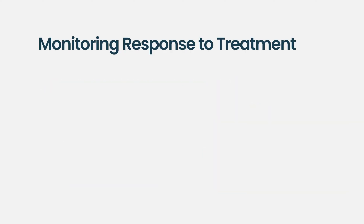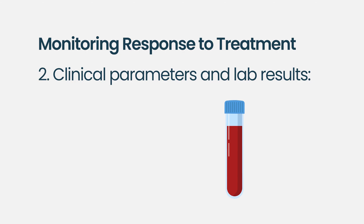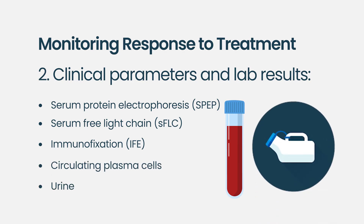In terms of clinical parameters and labs, we monitor a myriad of tests. These include blood tests such as M protein, free light chain levels, immunoglobulin levels, and in some cases we monitor the circulating plasma cells in the blood. We also look at the urine, as many myeloma patients can have monoclonal protein detected there.